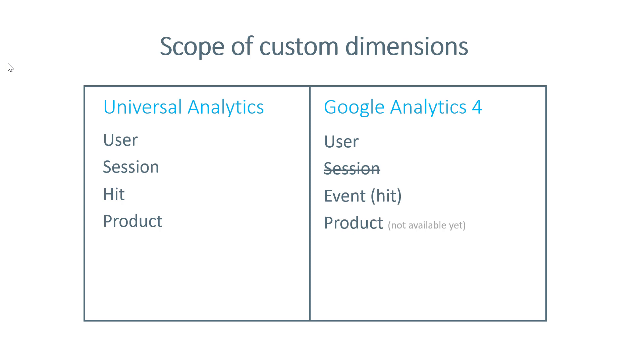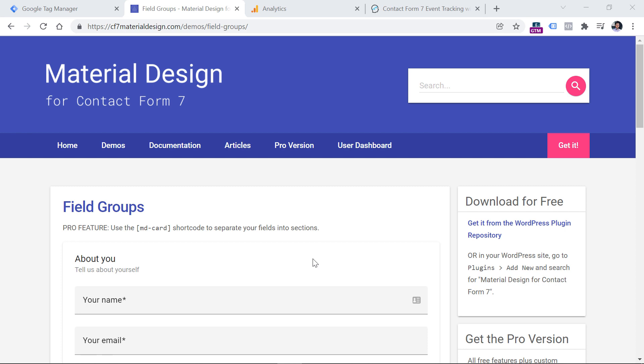Comparing both versions: both Universal Analytics and GA4 have user-scoped custom dimensions. Only Universal Analytics has session-scoped custom dimensions. Both have hit-scoped custom dimensions, but GA4 has renamed that scope to 'event.' Also note that if you're reading older tutorials, user-scoped custom dimensions were previously called user properties — Google eventually renamed them. Product-scoped custom dimensions exist in UA but are not yet available in GA4, though given their importance for many businesses, they will likely be introduced eventually.